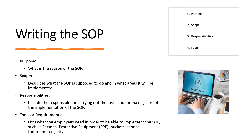Next we continue with the body of the SOP. Purpose — here you can make reference to the regulations and standards you want to comply with, and state the reason for the SOP. It is beneficial to have this element included in all SOPs. Scope — this section describes what the SOP is supposed to do and in what areas it will be implemented. Responsibilities — this section identifies who is responsible for carrying out the tasks and who is responsible for ensuring the implementation of the SOP.